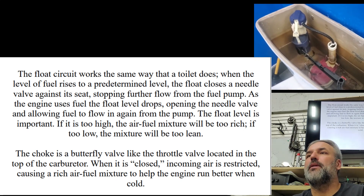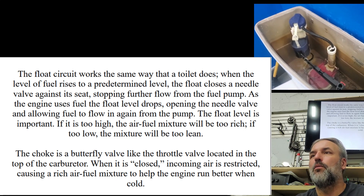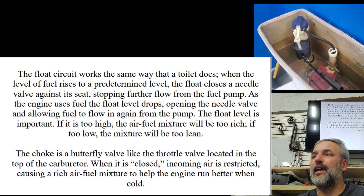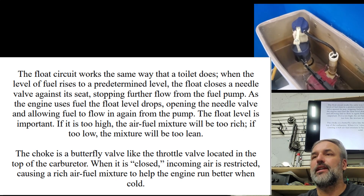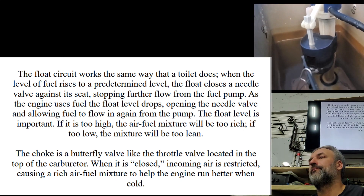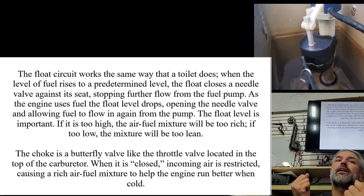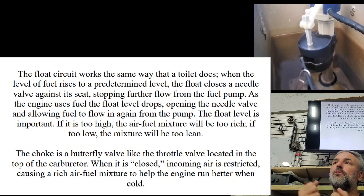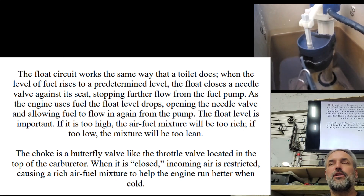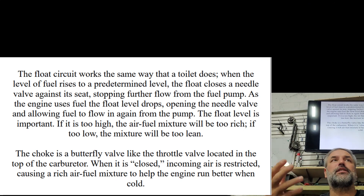The choke is a butterfly valve, like the throttle valve, located in the top of the carburetor. When it is closed, the incoming air is restricted, causing a rich air-fuel mixture to help the engine run better when cold. The choke cuts the air going into the engine, which makes the air-fuel mixture richer, allowing it to start easier cold. But once the engine warms up, you have to turn the choke off — otherwise the air-fuel mixture would be too rich and the car would bog out.